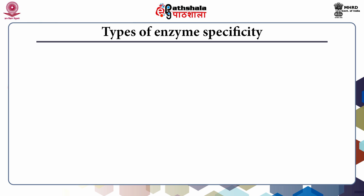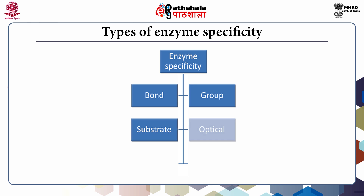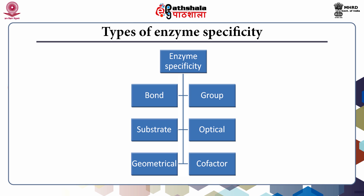Types of enzyme specificity: Enzyme specificity is generally of six distinct types. These are bond specificity, group specificity, substrate, optical, geometrical, and cofactor specificity. Now we will look at each of these specificity types in detail.